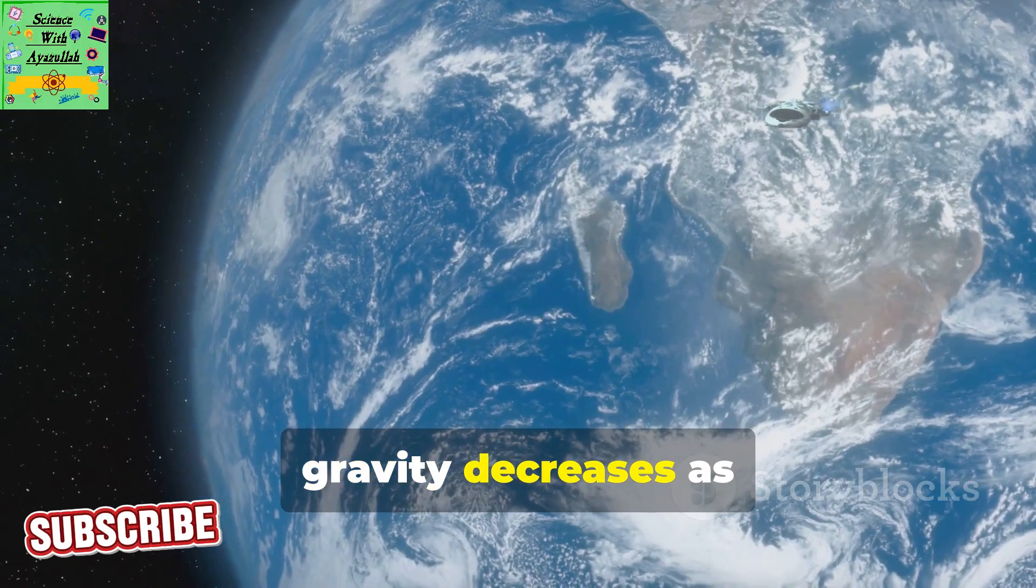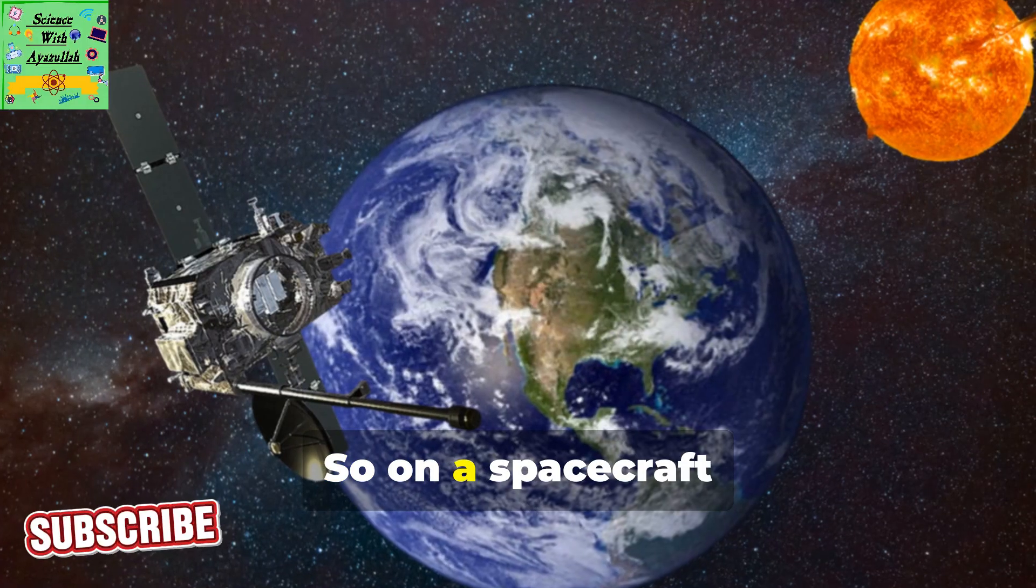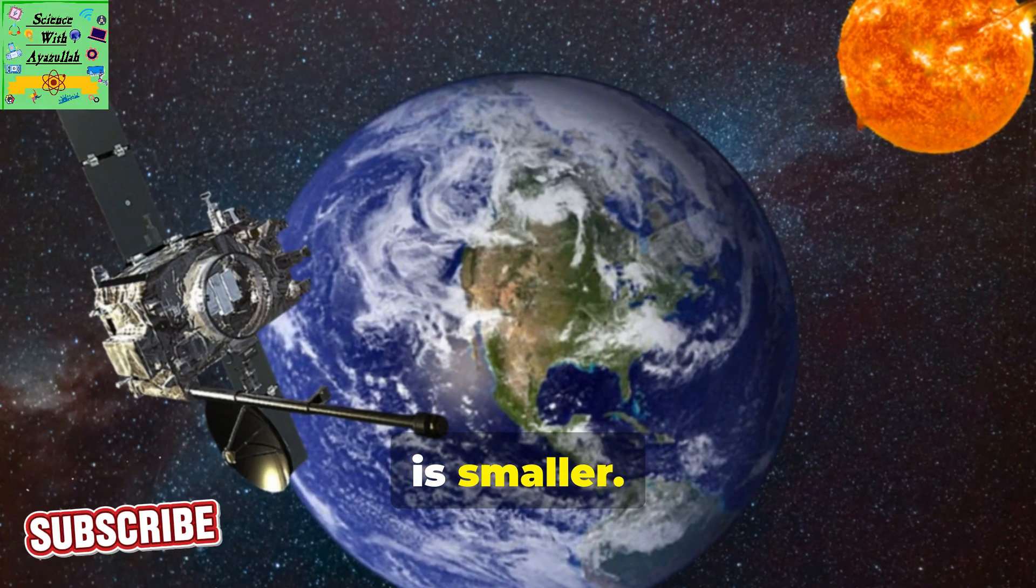The strength of gravity decreases as you go further from a large object such as Earth. So on a spacecraft far from Earth, gravity from Earth is smaller.